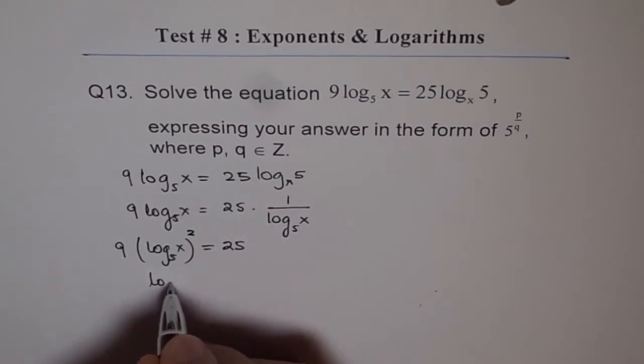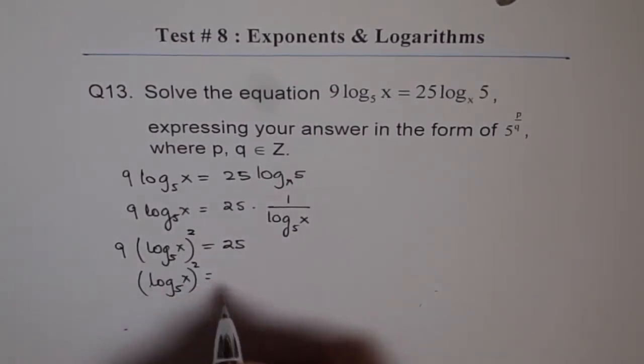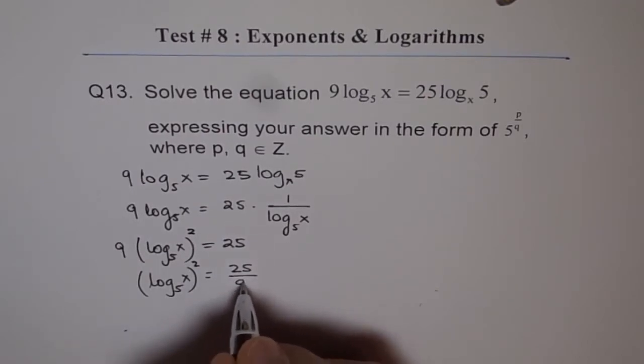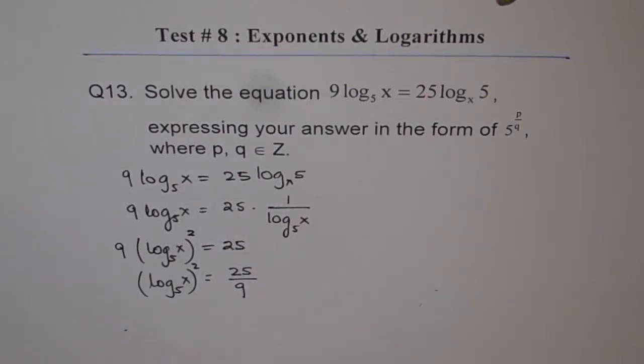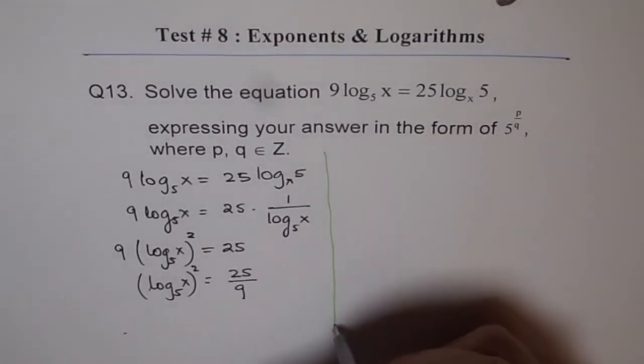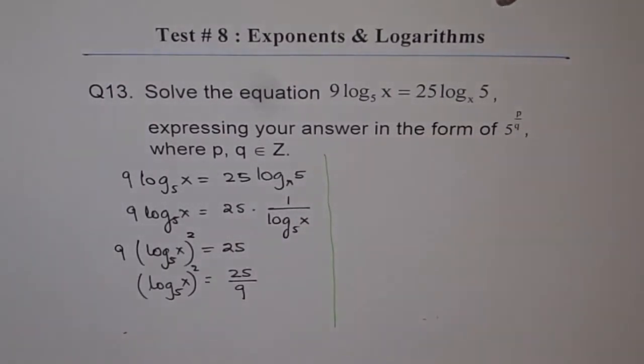So, I got log 5 of x whole square, and on the right side, I'm left with 25. So, now I can write log 5 of x whole square is equal to 25 over 9. Do you see that? So, I divide by 9 this time. So, that is how we're trying to solve our equation. And now, let's try to get the answer.